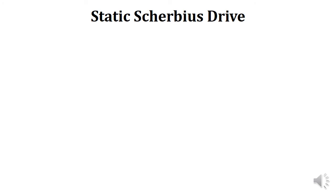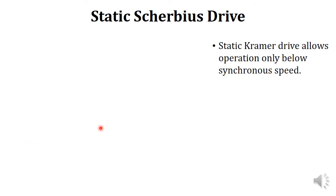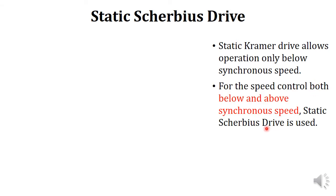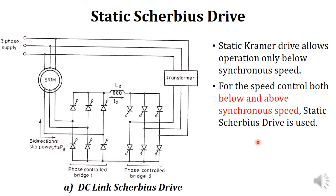In the previous lecture we discussed the static Kramer drive, which allows operation only below synchronous speed, that is sub-synchronous operation only. But for applications which require operations both below and above synchronous speed, we can use the static Scherbius drive. We will be discussing this based on the DC link Scherbius drive, as the principle of operation is the same for both configurations.